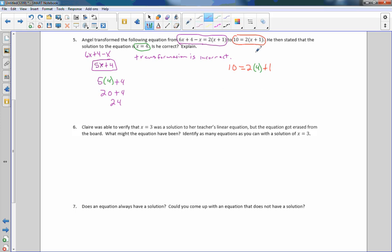Hopefully you caught that as I was doing it. I forgot this parentheses here. It's 2 times x plus 1 inside. Then I would simplify this, and PEMDAS says to do the parentheses first. 4 plus 1 is 5, and therefore 10 does equal 10. But, 10 does not equal 24. So, he is not correct. If he transformed this into this, then they both should have come out with the same value when you substitute in 4.